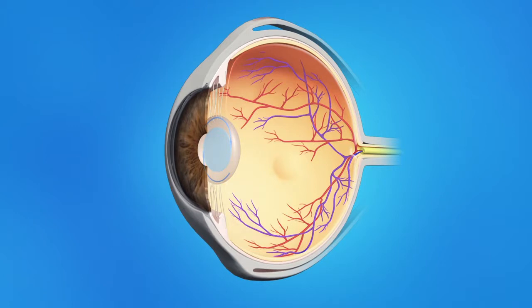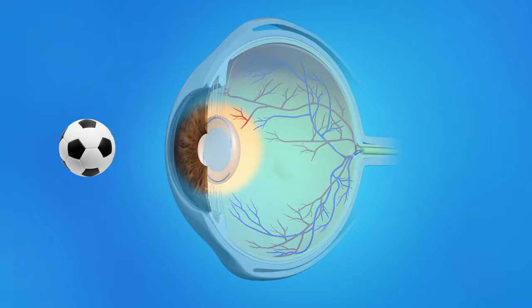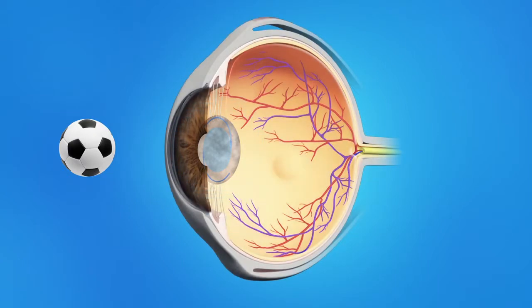The artificial lens implanted in your eye during cataract surgery is clear, allowing light rays to pass through and focus precisely on the retina. Eventually, however, the capsule holding the IOL can become cloudy. As with a cataract, when light passes through this cloudy capsule, it no longer focuses clearly on the retina, and objects appear hazy or blurred. A YAG laser capsulotomy is a brief outpatient procedure often performed right in the ophthalmologist's office.